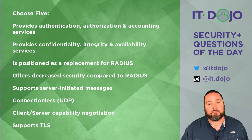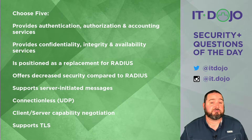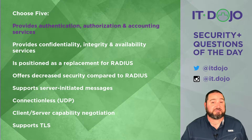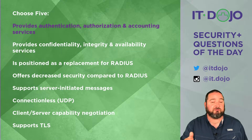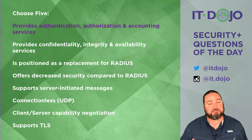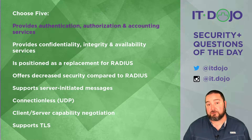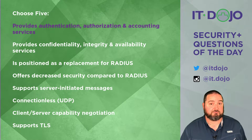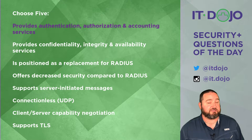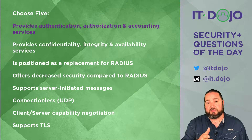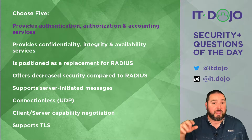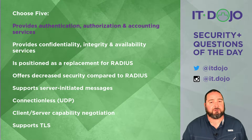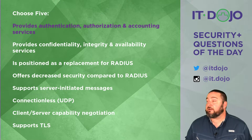Choice number one is a correct answer: Diameter does provide for authentication, authorization, and accounting — more lovingly referred to as Triple-A. It falls into the same world as TACACS+ as well as RADIUS, and then Diameter — all of which are Triple-A servers or services. The next option is not correct: it says Diameter provides confidentiality, integrity, and availability services. That is not its specific function — Diameter does not provide CIA.